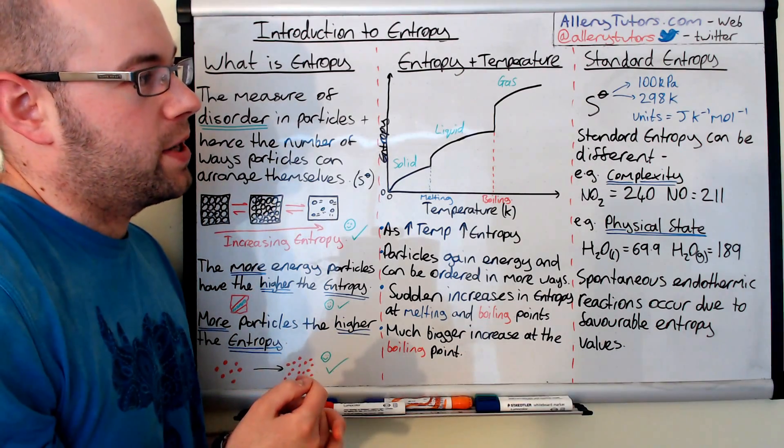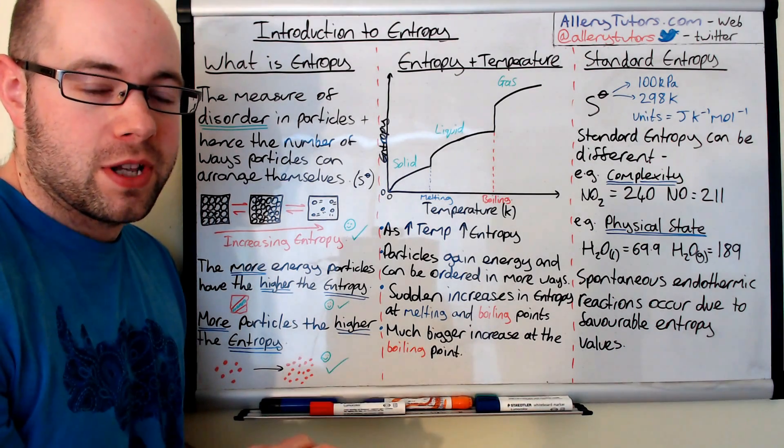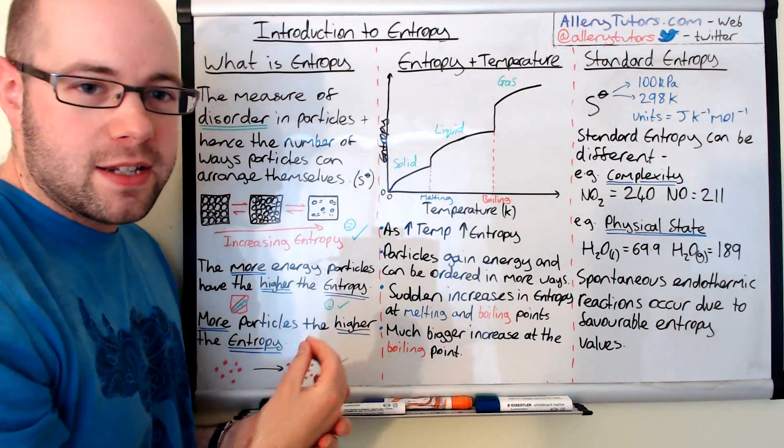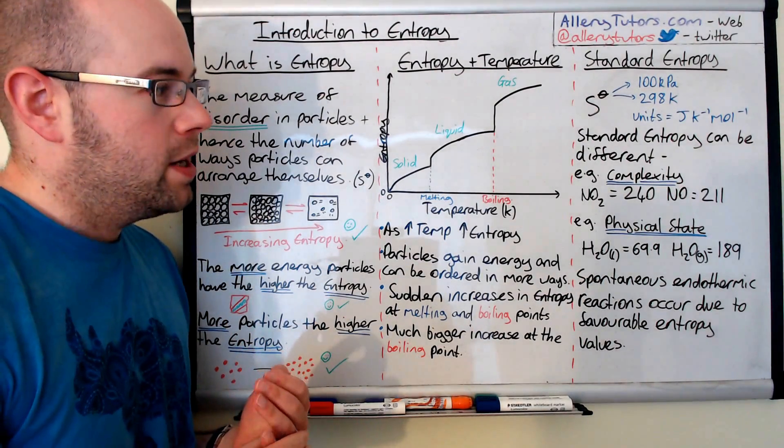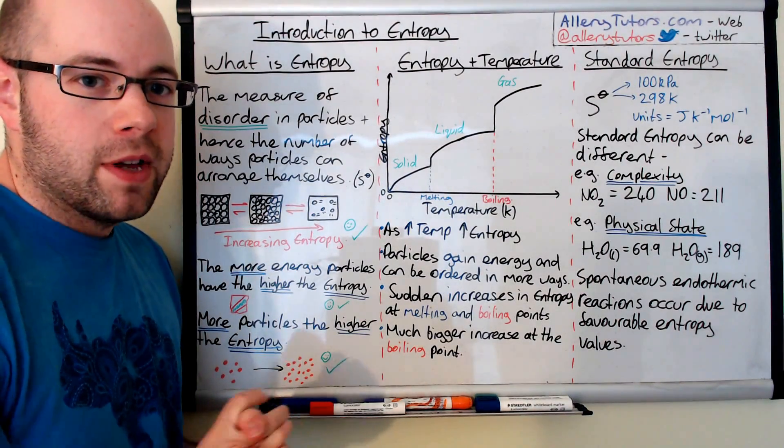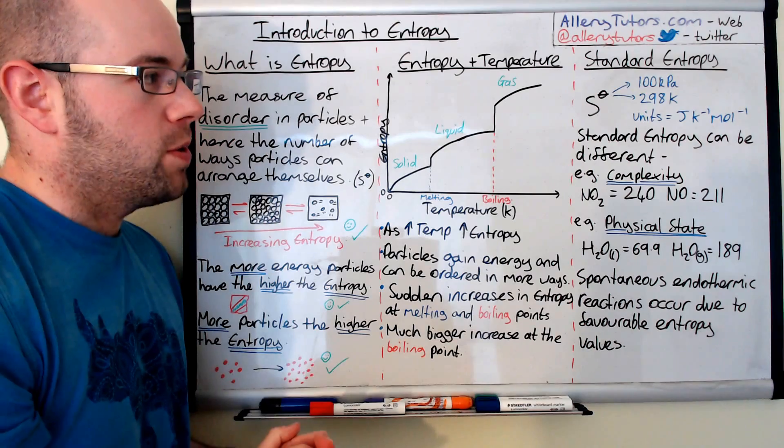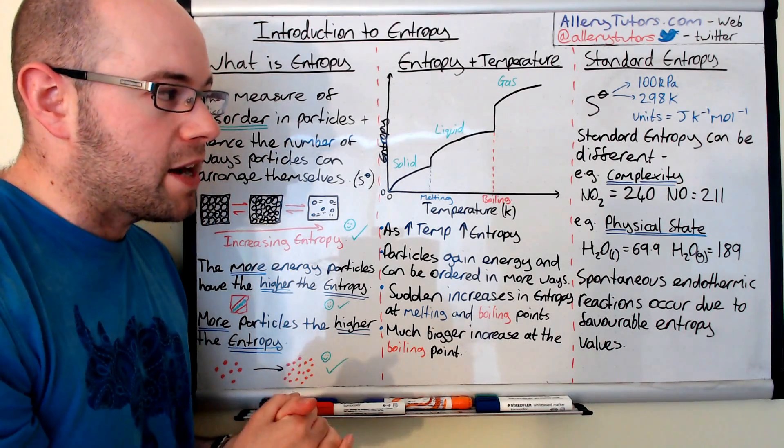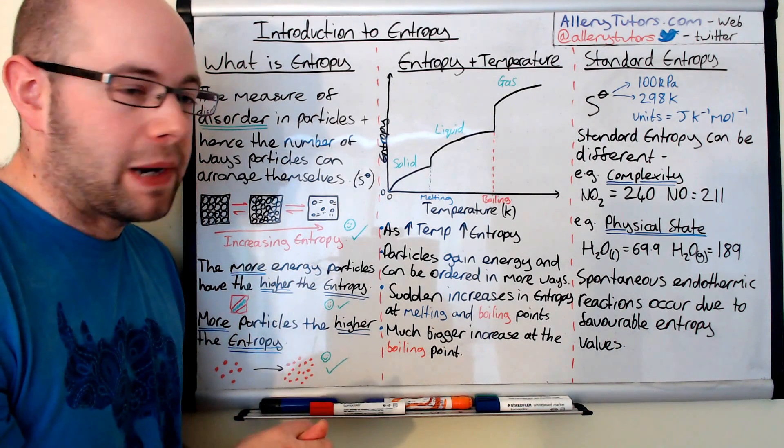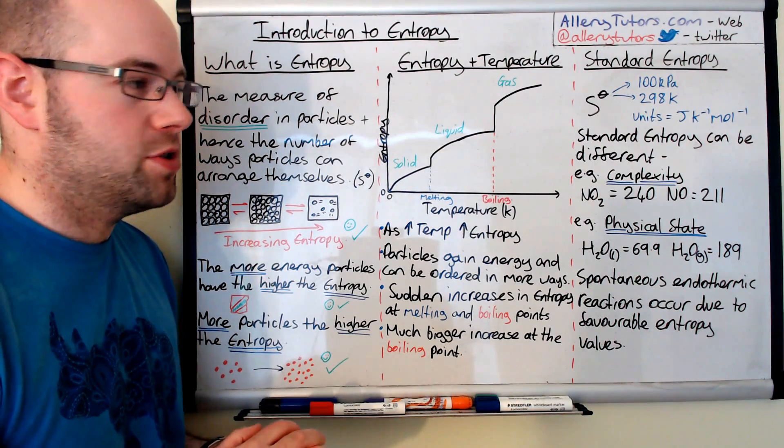A final thing is the standard entropy value can be different depending on the conditions we put the substance in. For example, say we've got NO2 and NO, the complexity of the molecule changes the value of entropy. The more complex the molecule is, the higher the entropy value, because there's more possible ways in which we can arrange that particle. So NO2 has got an entropy value of 240 joules per Kelvin per mole, whereas NO only has a value of 211 joules per Kelvin per mole, because the complexity of that molecule isn't as great. It's just got one oxygen and one nitrogen, as opposed to two oxygen and two nitrogen.